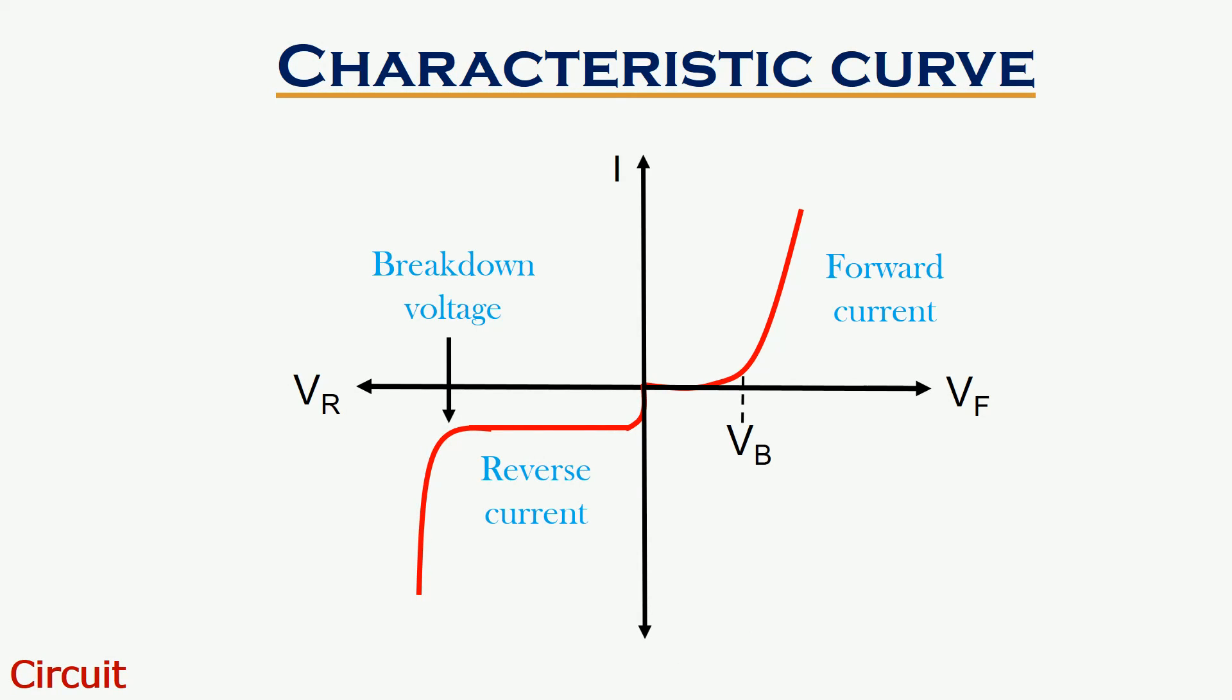The figure here shows the characteristic curve of a diode in both forward and reverse biased conditions. Here, x-axis represents the voltage applied to the device and y-axis represents the current that flows through the device.